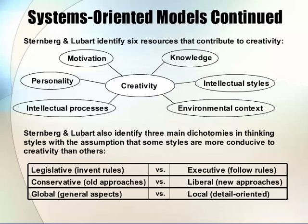Systems-oriented models continued. Sternberg and Lubert identify six resources that contribute to creativity: intellectual processes, personality, motivation, knowledge, intellectual styles, and environmental context. They also identify three main dichotomies in thinking styles, with the assumption that some styles are more conducive to creativity than others — legislative (invent rules) versus executive (follow rules); conservative (old approaches) versus liberal (new approaches); global (general aspects) versus local (detail oriented).